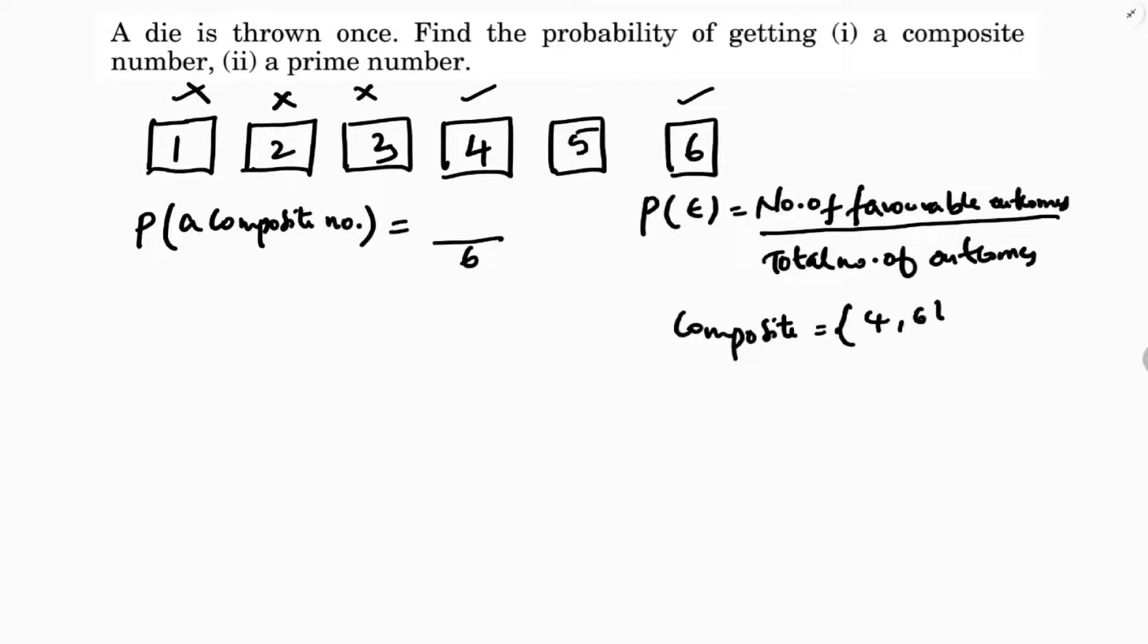So 4 and 6, so 2 numbers are there. So 2 over 6 equals 1 over 3. The first answer is probability of getting a composite number is 1 by 3.